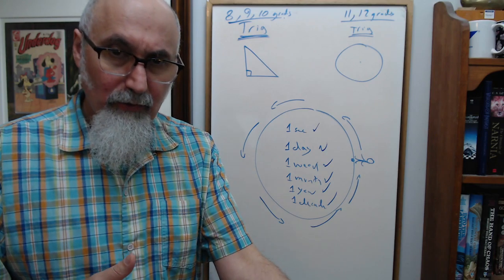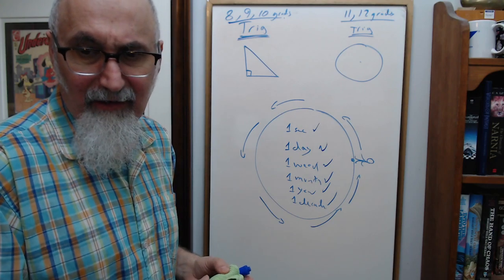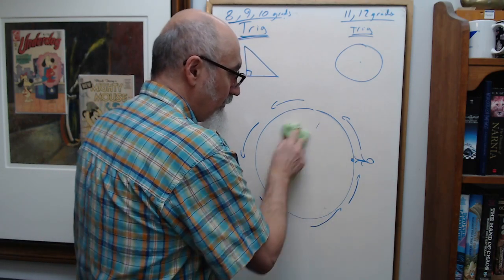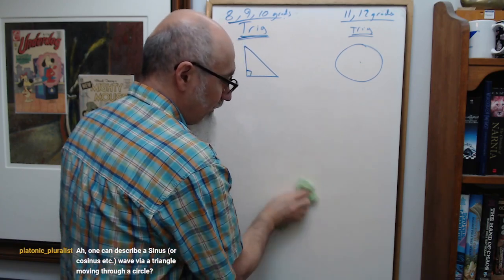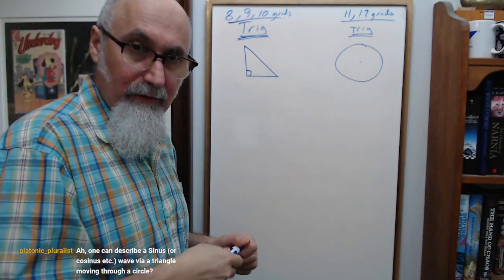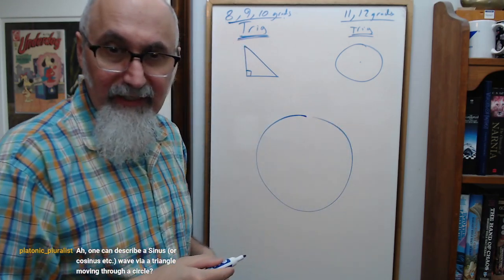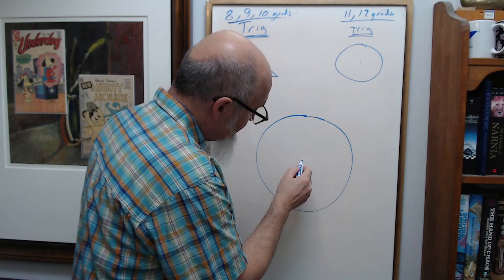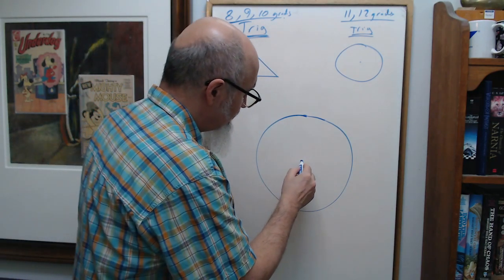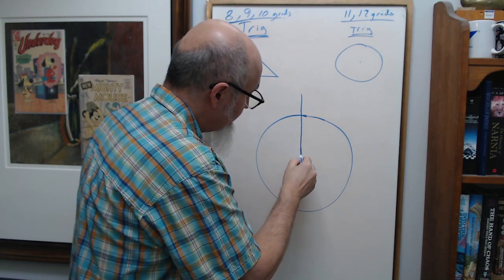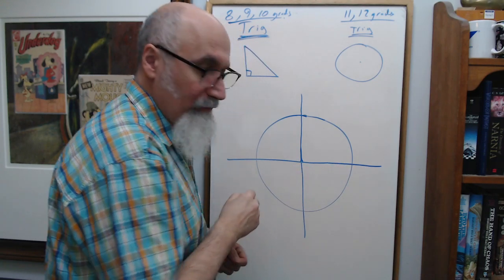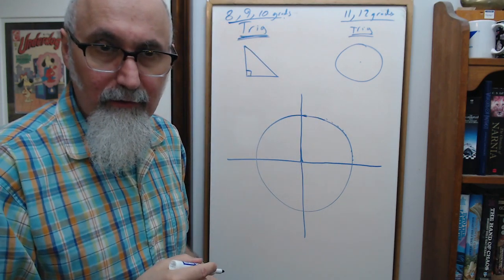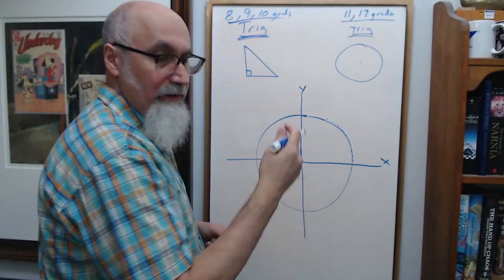So what do you do to study cyclic functions? You take the ideal cyclic function — a circle — find its center, put it on a grid, and break it down so you can put numbers on it. We put it on a Cartesian coordinate system — the x and y axes.